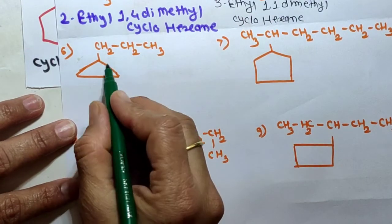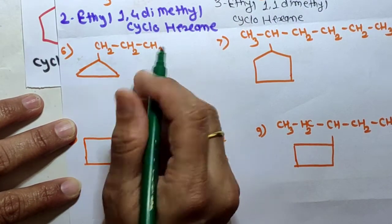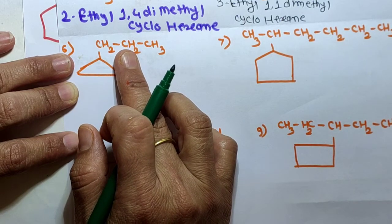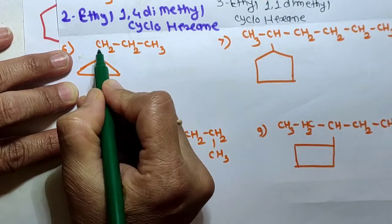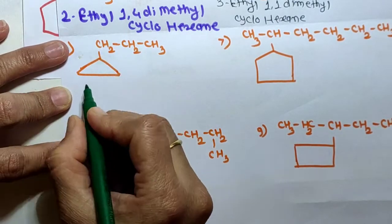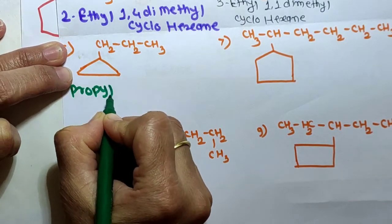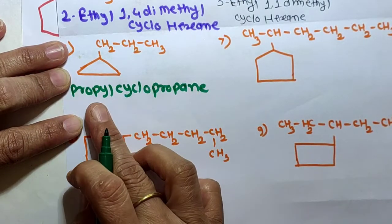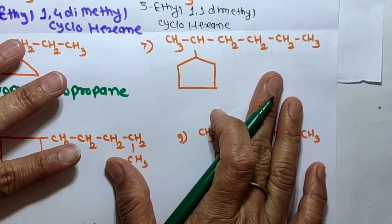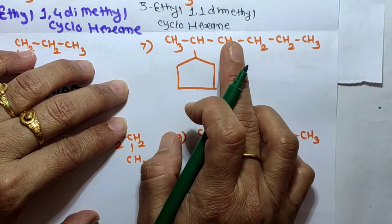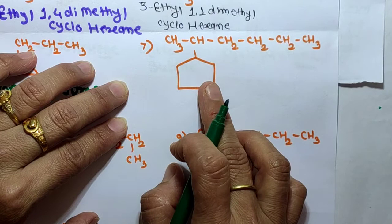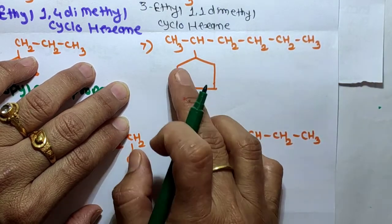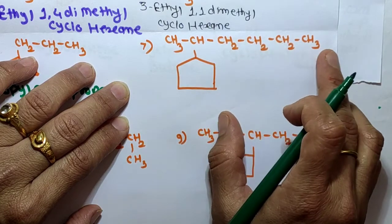Next: a three-carbon ring with a three-carbon chain. When the ring contains more or equal number of carbon atoms than the alkyl group, the alkyl group is attached as a substituent and this is a derivative of cycloalkanes. The chain is again a propyl group, so its name is propylcyclopropane — cyclopropane is the ring and propyl is the three-carbon chain. In the next structure, the alkane chain contains a greater number of carbon atoms than the ring, so the ring becomes the substituent.